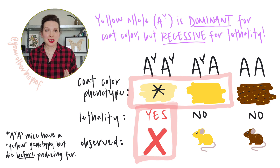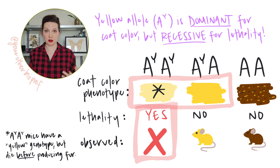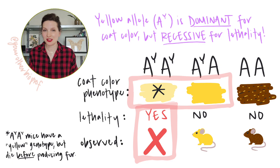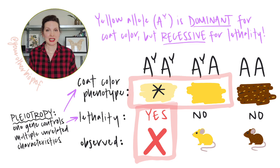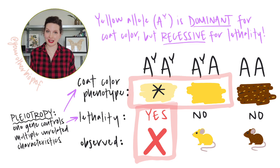This gene impacts both a coat color phenotype as well as survivability. This is an example of pleiotropy — a single gene controlling multiple unrelated characteristics.